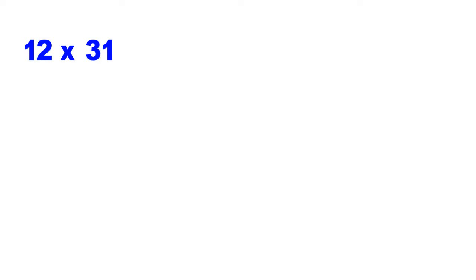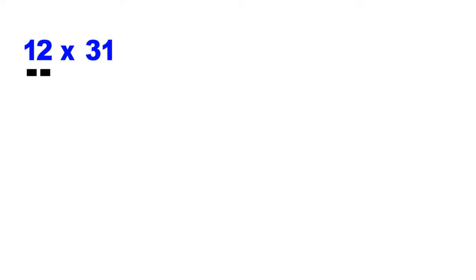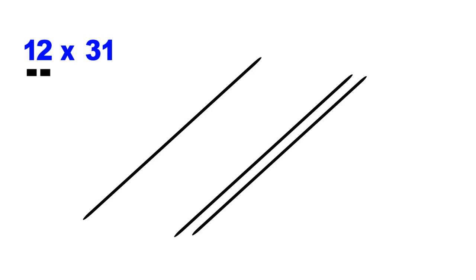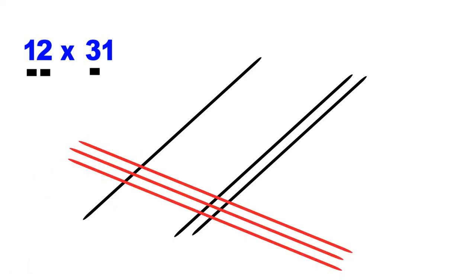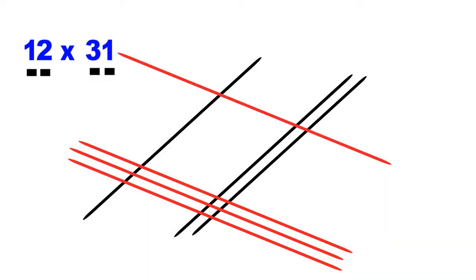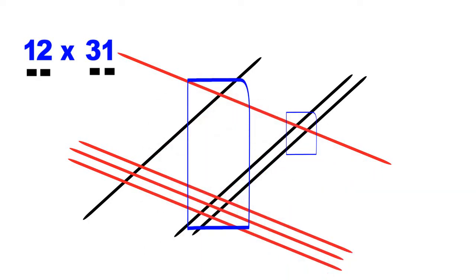12 multiplied by 31. The first number is 12. Draw one line for 1. Leave some space. And then, draw two lines for 2. 1 and 2. We have to go from left to right. Three lines for 3. 1, 2, and 3. Leave some space. And then, one line for 1. That gives us 3 vertical zones. And we start with the 1 on the extreme right.